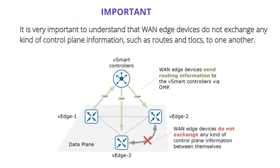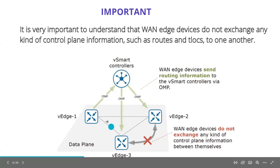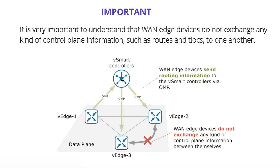This is a very powerful thing. The vEdge devices — the edge routers — do not have routing information exchange with each other directly. They share routes and TLocs with vSmart only. They will never talk to each other directly from a control plane perspective. If vEdge 1 has to communicate with vEdge 3, it will actually go to the vSmart, and vSmart will decide — based on the policy — whether to allow them to communicate, whether it's an IPsec tunnel or data traffic.